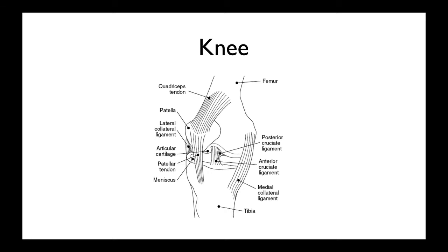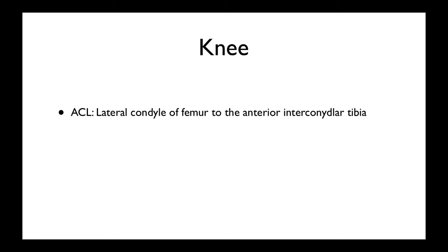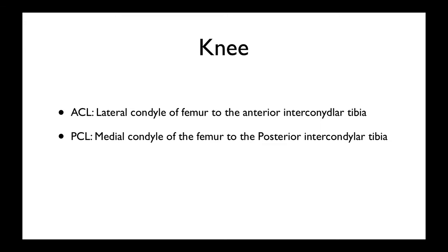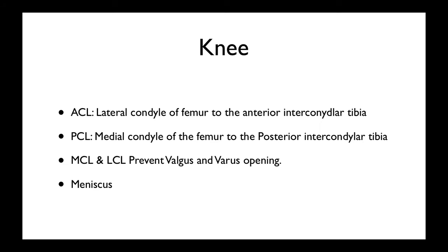The menisci are nature's shock absorbers, which allow you to run pain-free without having bone-on-bone rubbing together. The anterior cruciate ligament goes from the lateral condyle of the femur and attaches to the anterior intercondylar area — anterior is where it gets its name. The PCL goes from the medial aspect to the posterior aspect of the tibia. The MCL and lateral collateral ligament prevent valgus and varus opening, and you have the medial meniscus and lateral meniscus.